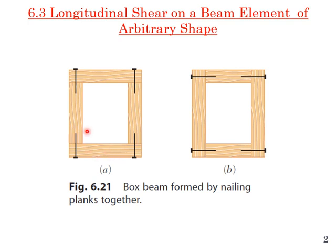For example, if you look at these two box beams made up of four planks each — one, two, three, four — both are made of four planks, but if you look at the configuration of the nails, it can be vertical or horizontal nails. The shear force is acting at the centroid of the section in the same direction for both of them.